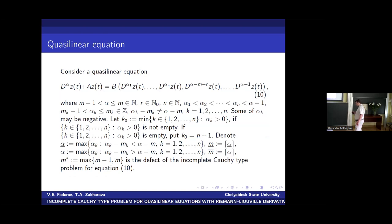And we come back to our problem and define underlined maximum of alpha_k with the fractional part less than fractional part of alpha. And underlined the minimal integer order which is not less than alpha underlined. And alpha overlined maximum of alpha_k with fractional part greater than alpha. And m overlined by the same way is defined. And m star is the maximum of these two numbers. It is defect of the incomplete Cauchy type problem.